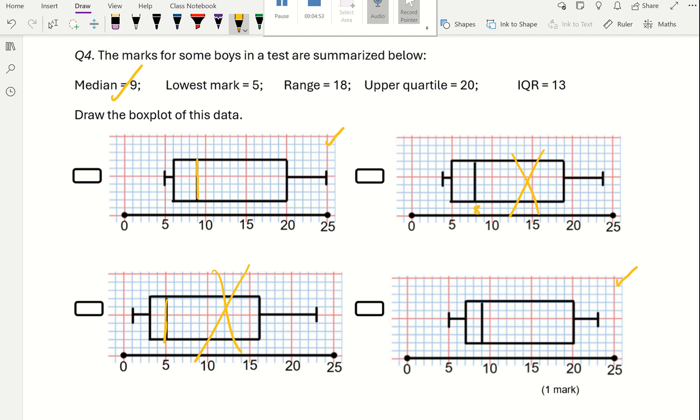Then I look at the lowest mark. The lowest mark is 5. Well, you can see the lowest mark is this point here. They're both 5, so they're still contenders.